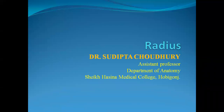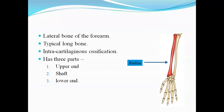Dear students, today we are discussing about the radius. Radius is the lateral bone of the forearm, while ulna lies medially and radius lies laterally. It is a typical long bone, so it ossifies intracartilaginously.